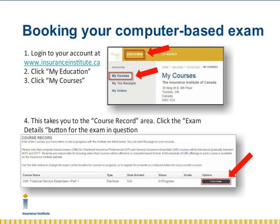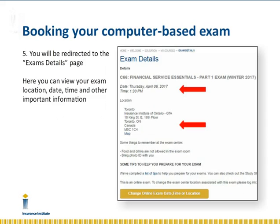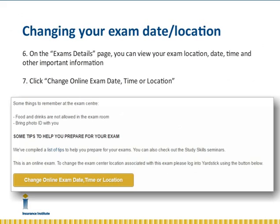You will then see your courses listed under your course record. By clicking on Exam Details for the exam in question, you can view your exam date, time, and location, as well as other important information pertaining to your exam. If you scroll down on the My Courses page, you will see the button Change Online Exam Date, Time and Location.